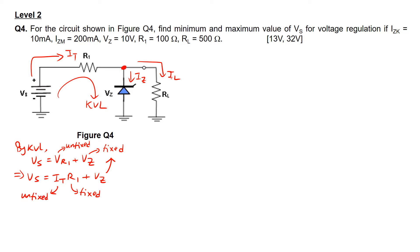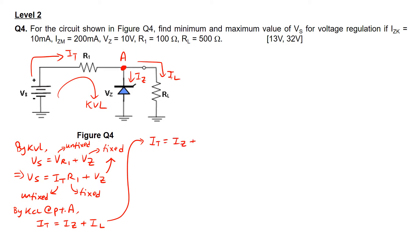Placing this point as point A, by KCL at point A, the current It will equal the Zener current Iz plus the load current Il. This expands to It equals Iz plus Vz over RL. Since the load resistor RL is in parallel with the Zener diode, VrL equals Vz, which is a fixed value. RL is also a fixed value, so Il is a fixed value overall, and therefore Iz is the unfixed quantity.